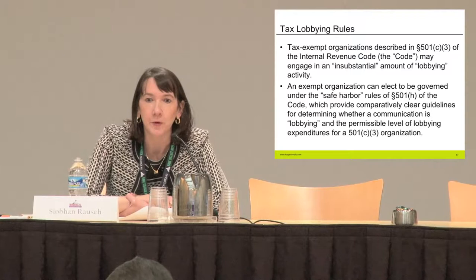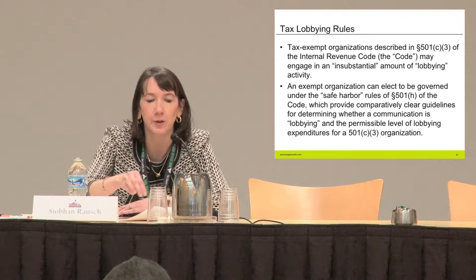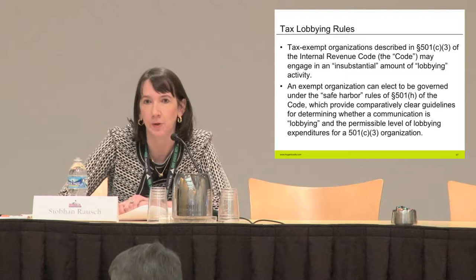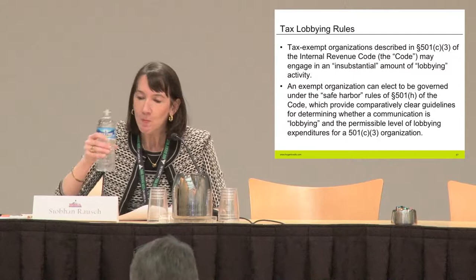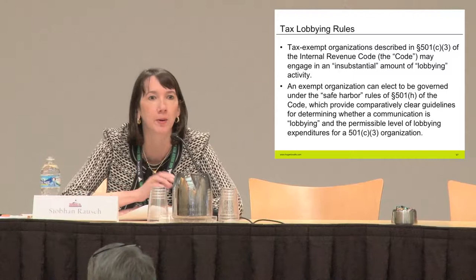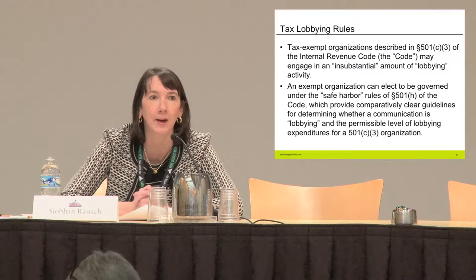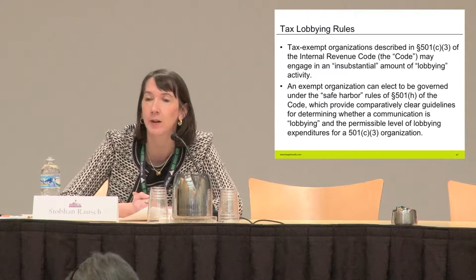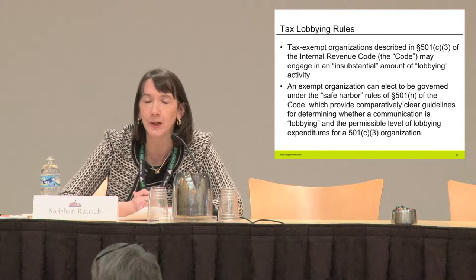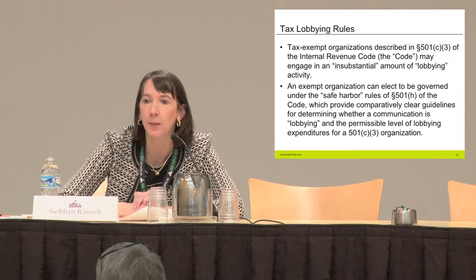You may also refer to them as an electing organization. If you choose to elect to follow these rules, you have a clear set of definitions and exceptions to lobbying, and you have clear rules for how much you can actually spend on lobbying activity. The way you elect to be governed by 501(h) is to file a one-page form with the IRS. I encourage you to go back to your organizations and find out whether you have elected to follow these tax lobbying rules. If you haven't, I think you want to seriously consider it — for the clarity in what is lobbying and for what you can spend on lobbying.